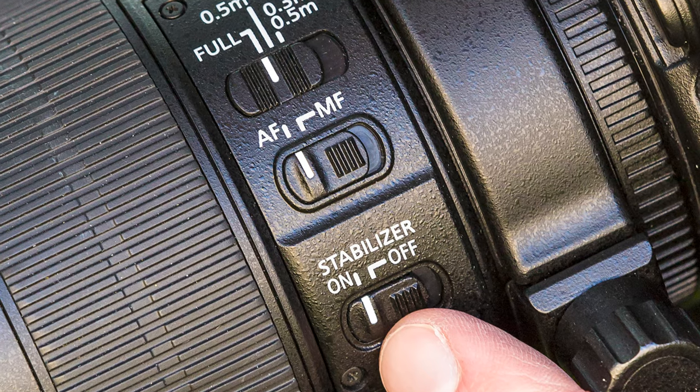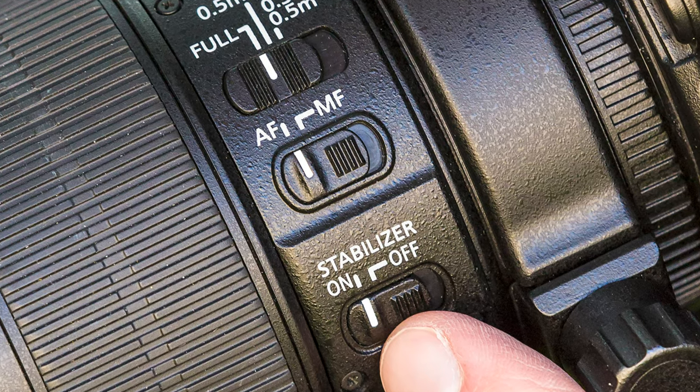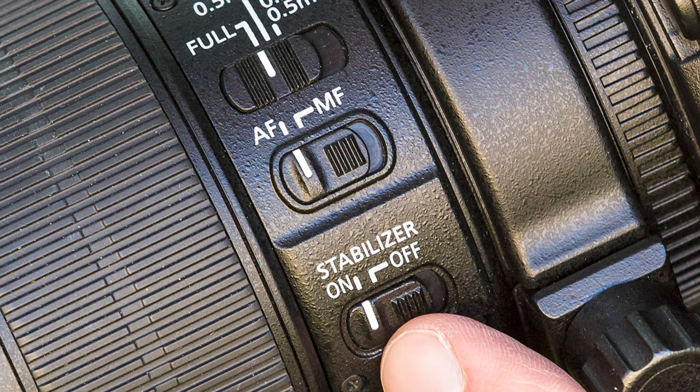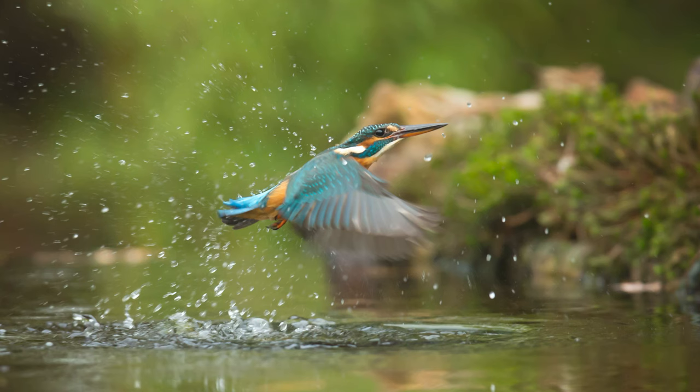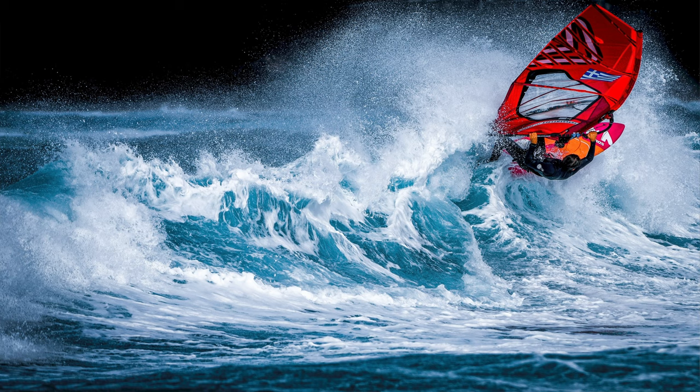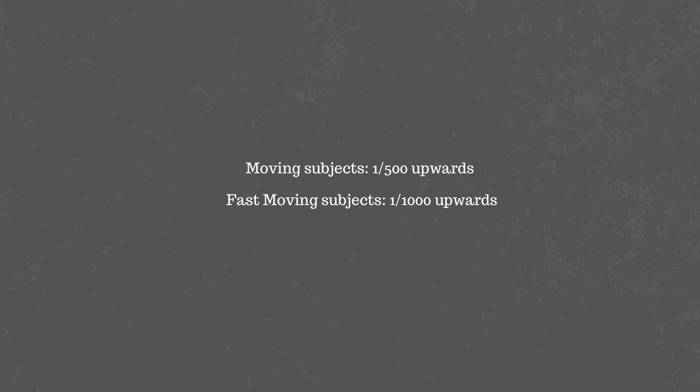This can vary depending on whether the lens has IS (image stabilization) or your camera has in-body stabilization — that means you can use a lower shutter speed without getting blurry photos. If you're shooting moving subjects, use a shutter speed of about 1/500th of a second or higher. For fast-moving subjects like wildlife or sports, crank it up to 1/1000th of a second or higher.